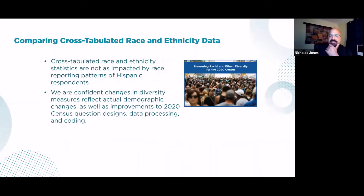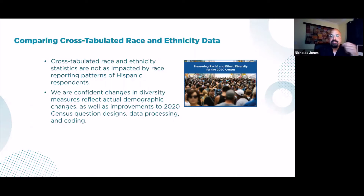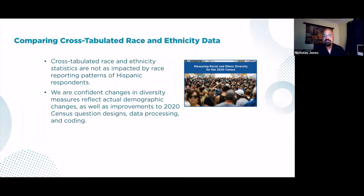We have an America Counts story that's a companion piece to the data discussed on August 12th. We conducted other analyses to illustrate how the 2020 census results allow us to measure our nation's racial and ethnic diversity and how it varies at different geographic levels. We cross-tabulate the race and the Hispanic origin statistics with our 2020 census redistricting table P2, and those results are not as impacted by race reporting patterns of Hispanic or Latino respondents, so we're confident the changes in diversity measures reflect actual demographic changes as well as improvements to question design, data processing, and coding.